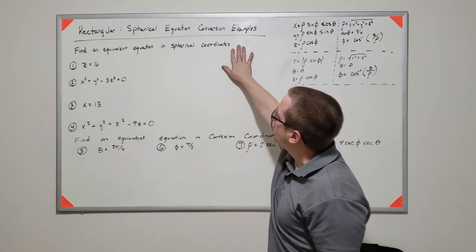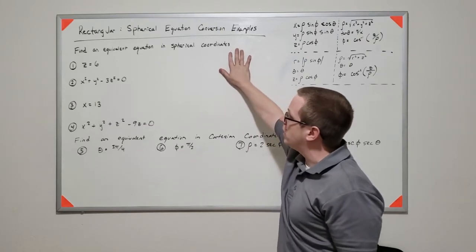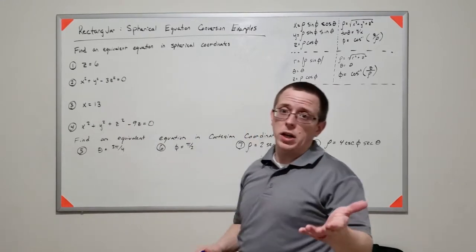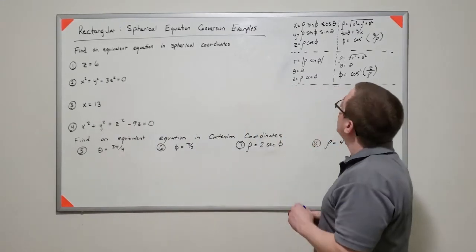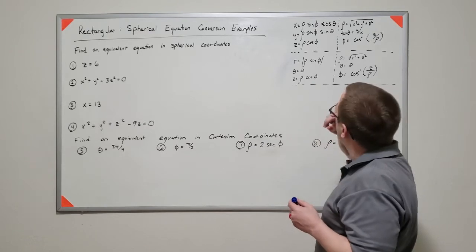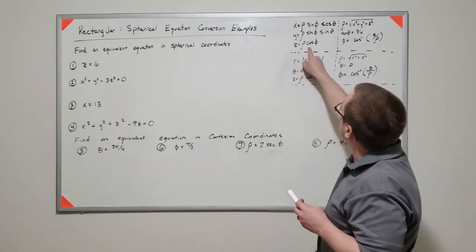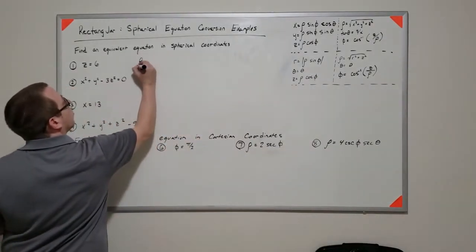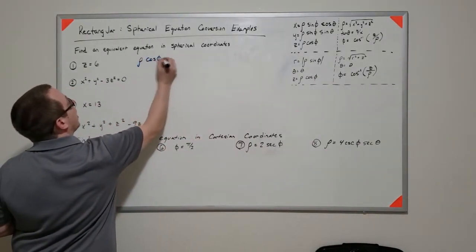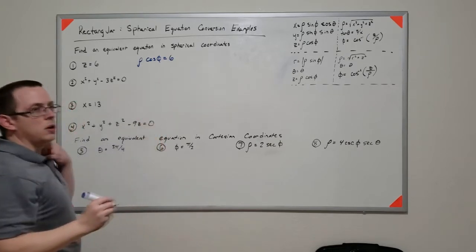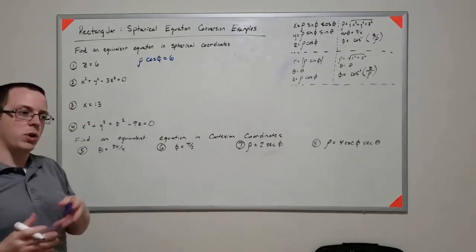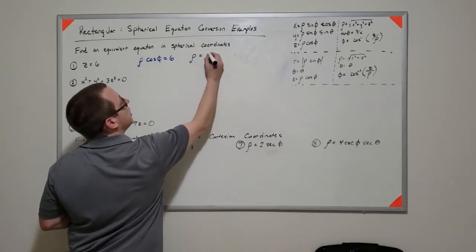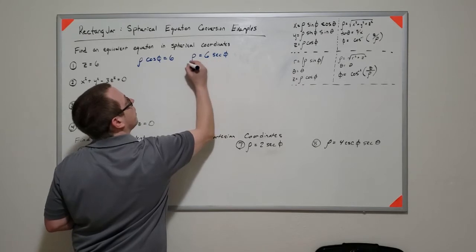We want to find an equivalent equation in spherical coordinates. If I have z equals 6, I know that z is ρ cosine φ. So I can say ρ cosine φ equals 6. But from an equation standpoint, you often want to isolate ρ, so it's more likely you would write ρ equals 6 secant φ.